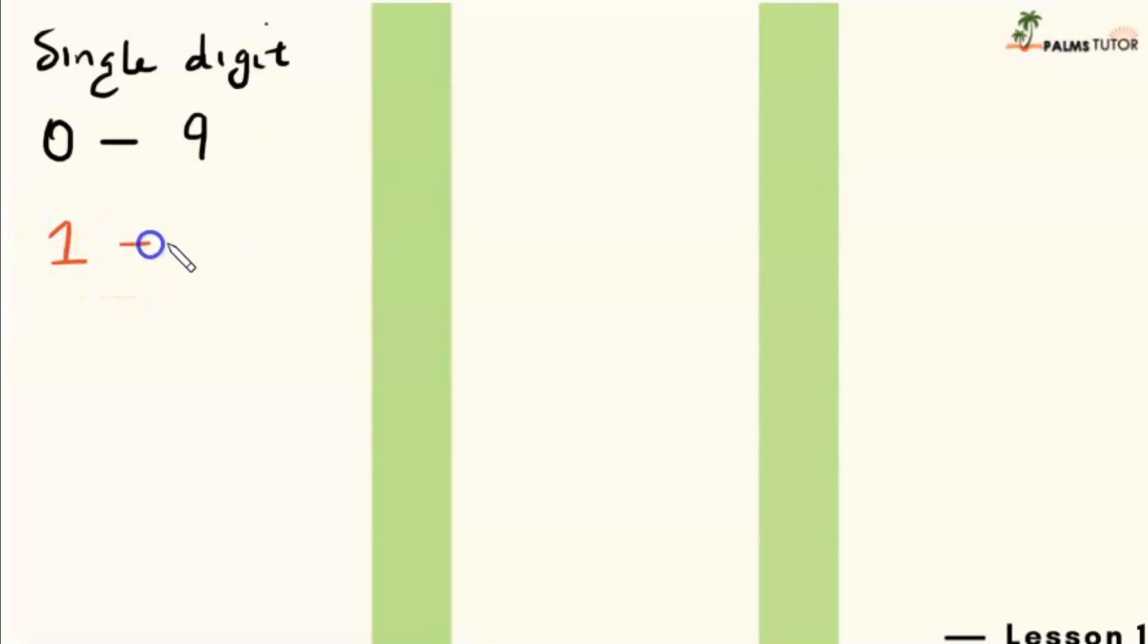What about zero? Zero is a number? Yes, zero is a number with just one digit also. And then numbers from zero, like I said, to nine are all one digit numbers, or we say single digit numbers.